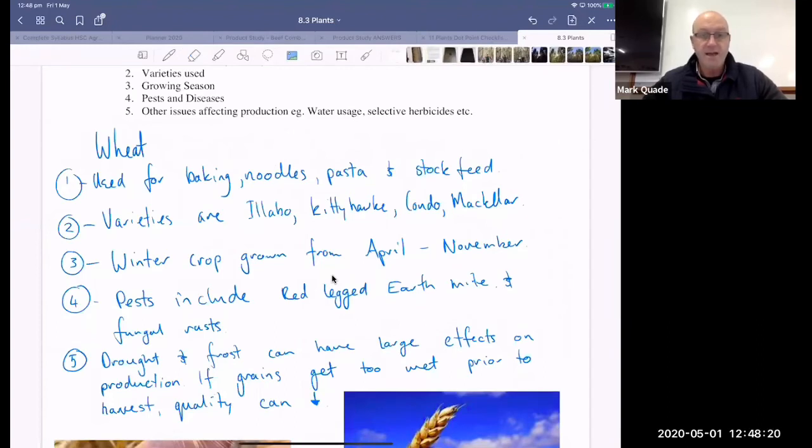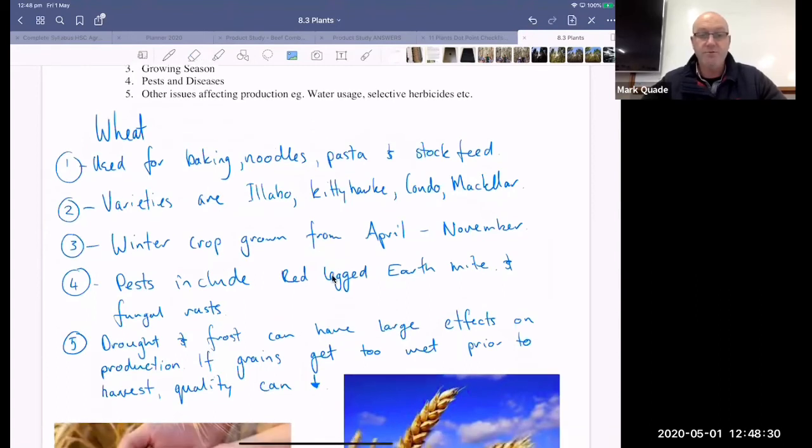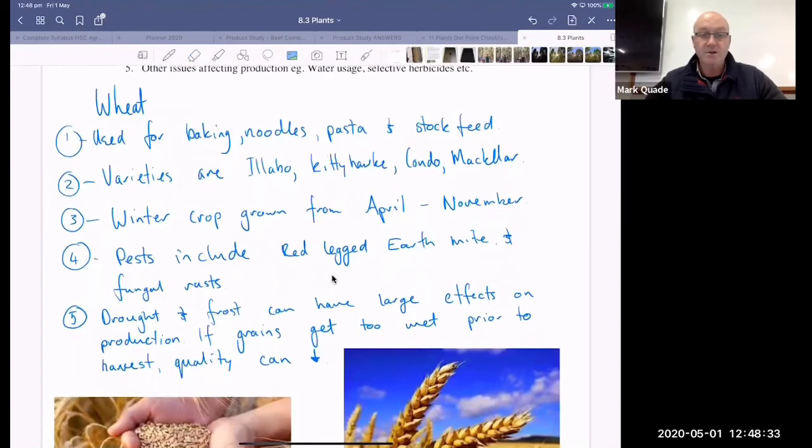Okay. Then what have we got? So when it's grown, so the wheat's a winter crop. So it's grown from April to November. Pests include red-legged earth mite and bungal rusts. So red-legged earth mite is a little eight-legged animal.